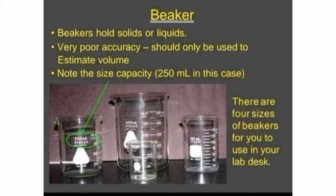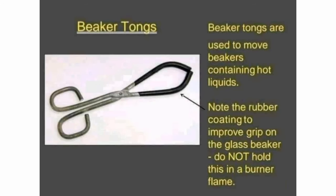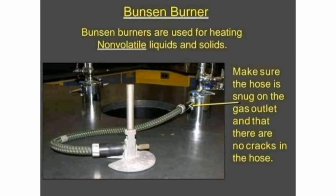Accuracy means the correctness of a measurement. The second apparatus is beaker tongs. Beaker tongs are used to move beakers containing hot liquids. The black area represents a rubber coating which improves grip on the glass beaker. Do not hold this in a burner flame, as it will start melting since it is rubber.